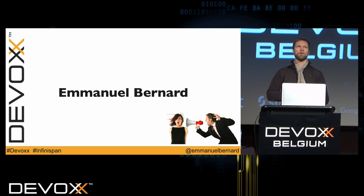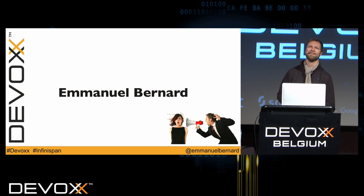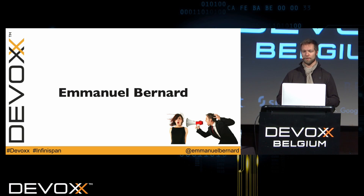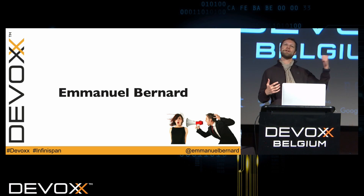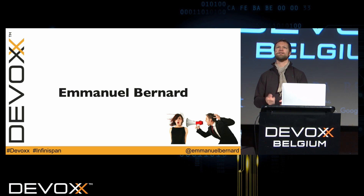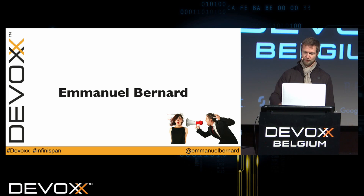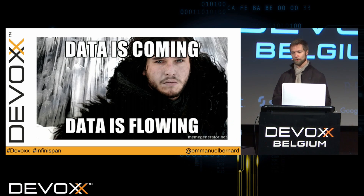My name is Emmanuel Bernard. I work at Red Hat, historically in the Hibernate team pretty much forever — working on the JPA implementation, and founding Hibernate Search, Hibernate OGM, Hibernate Validator, and so on. Right now I'm looking at all the data projects inside Red Hat and JBoss Middleware to create a common vision. I'm extremely interested in feedback for this presentation, so use the Devoxx application to give me your thoughts.